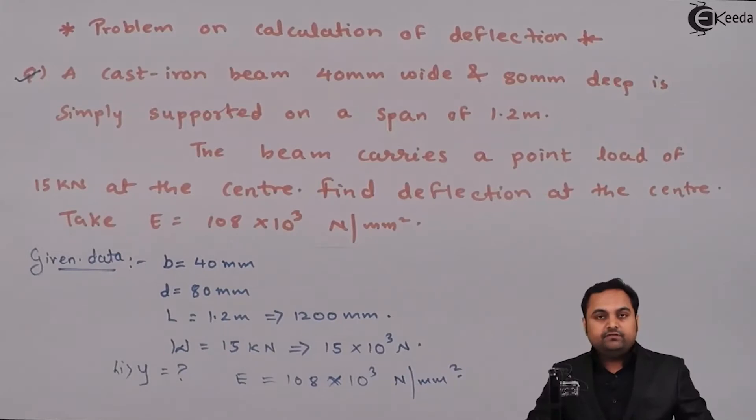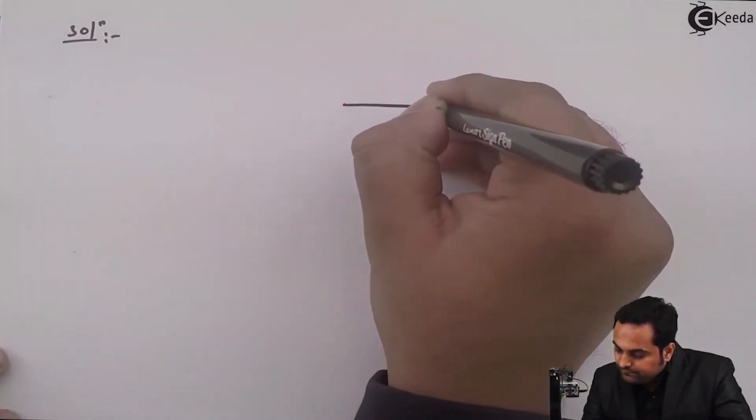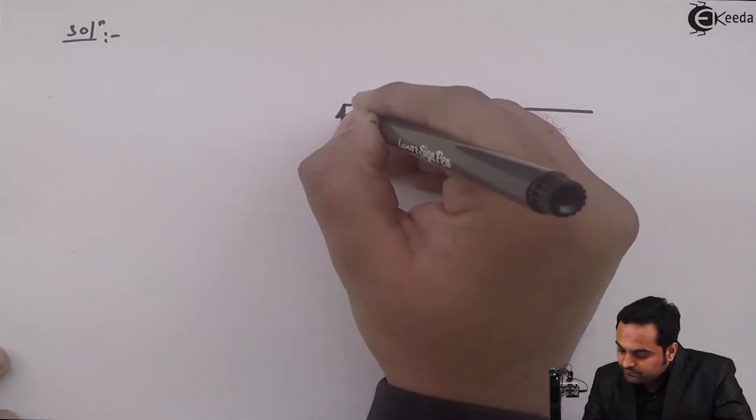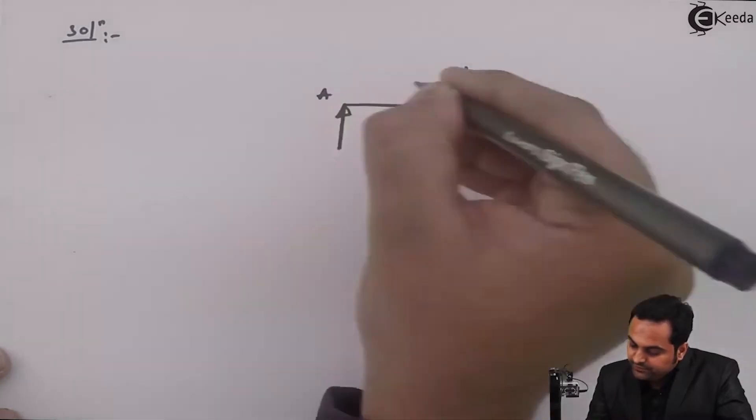Now this is the question we have, so let us try to get the solution to this problem. Now in the solution part, first I will draw the diagram. It is given that the beam is simply supported.